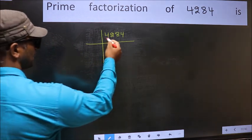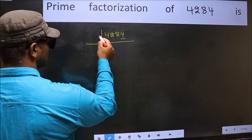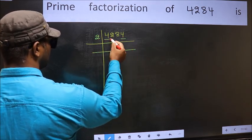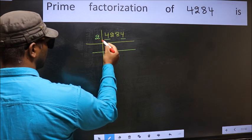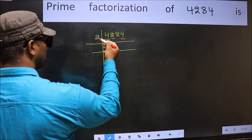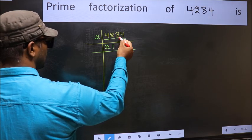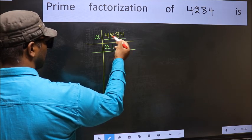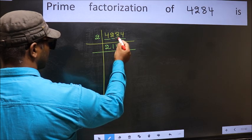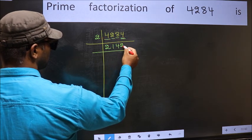Next, in this number the last digit is even, so take 2. First number 4 — when do we get 4 in the 2 table? 2 times 2 is 4. The other number 2 — when do we get 2 in the 2 table? 2 times 1 is 2. The other number 8 — when do we get 8 in the 2 table? 2 times 4 is 8. The other number 4 — 2 times 2 is 4.